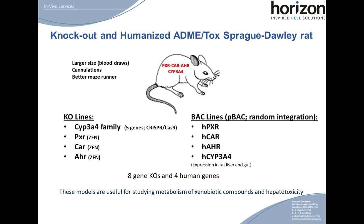Those knockout models fit right into the humanized model we have generated — a rat knocked out for the CYP3A family members, PXR, CAR, and another receptor, AHR. We then humanized the rat via BAC transgenesis, which is random integration of the human gene for the corresponding human genes. It is imperative that these genes express both in the liver and the gut. With this model, we have loss of rat gene function complemented by the human counterpart, allowing for human-specific study within an in vivo animal model. The advantage the rat has over mice for this model is its larger size, enabling more frequent blood draws, easier surgical procedures like cannulations for continued drug delivery, and better neurological models of study.